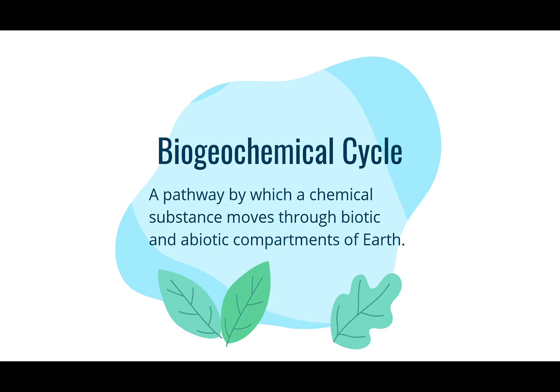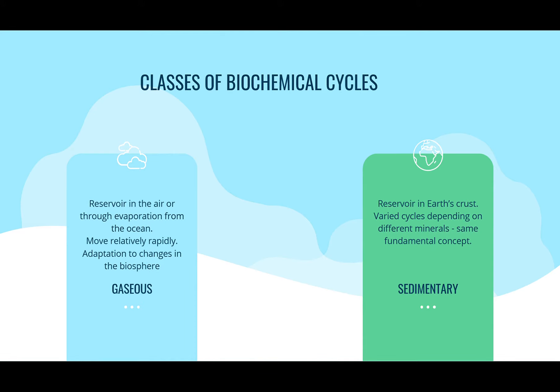The biogeochemical cycle is a pathway by which a chemical substance moves through biotic and abiotic compartments of the earth. Each biochemical cycle can be considered as having a reservoir pool — a pool of reserves of nutrients that is generally large, slow-moving, and abiotic.